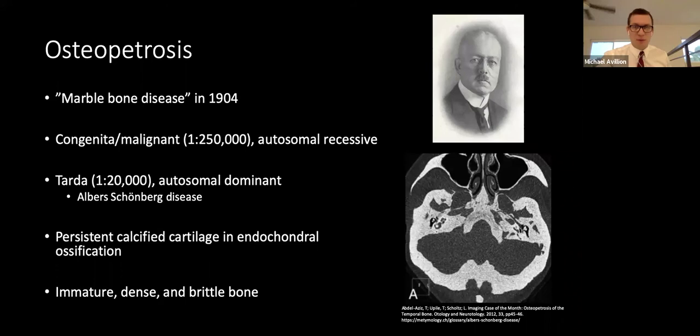The more common autosomal dominant tarda variant is associated with multiple gene mutations resulting in a faulty chloride channel in osteoclasts, which acidifies the environment required for bone breakdown. In pathology, there is persistent calcified cartilage from endochondral ossification, leading to immature bone that is dense and brittle.